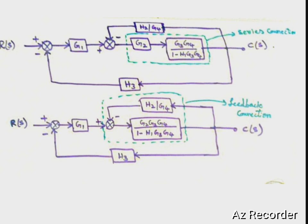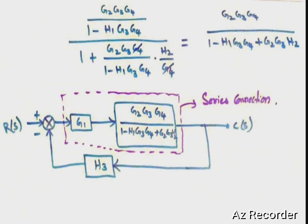Again, if you observe the dotted lines in the diagram, this is another feedback connection. The feedback sign is minus, so we use the formula G/(1 + GH). After simplification, the result is G2·G3·G4 divided by (1 − G1·H1·G3·G4 + G2·G3·H2).